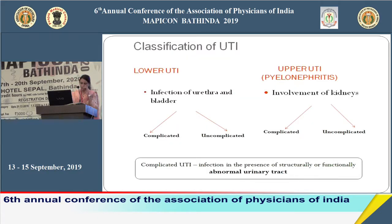Whenever we encounter a patient of urinary tract infection in the OPD, we need to classify whether the patient is experiencing a lower UTI or an upper UTI. Lower UTI is infection of the urethra and bladder, while involvement of the kidneys is labeled as upper UTI — also known as pyelonephritis. Both lower and upper UTI are further classified into complicated versus uncomplicated. A UTI is labeled complicated whenever there is some structural or functional abnormality of the urinary tract.